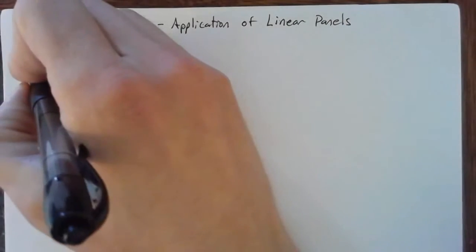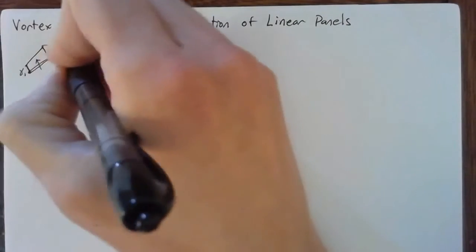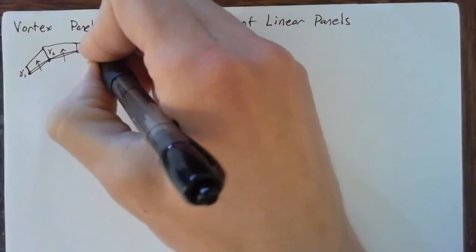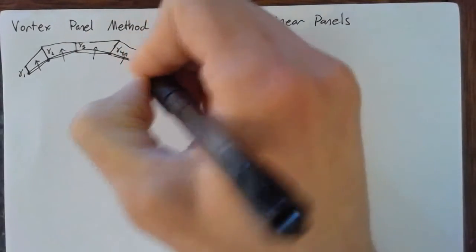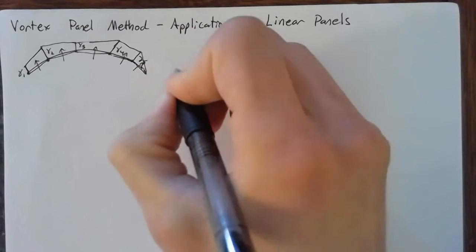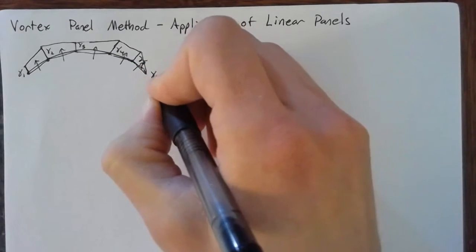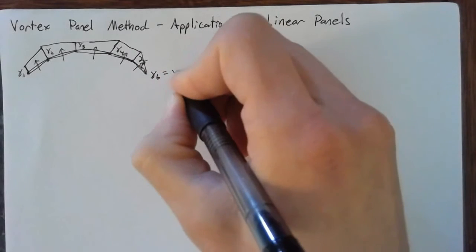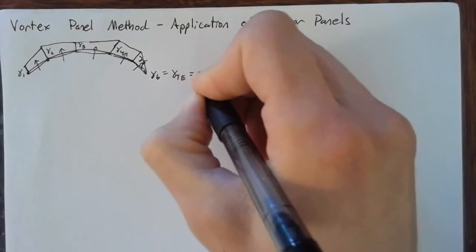And we're still going to be interested in the upwash on each of these panels. And as before, we're setting the gamma at the trailing edge equal to 0. Now we're going to call this gamma 6 is equal to the gamma at the trailing edge is equal to 0.